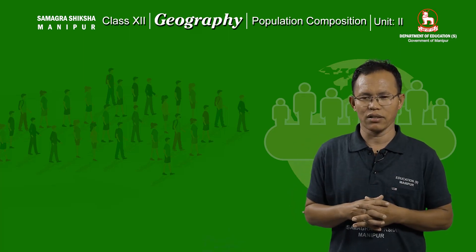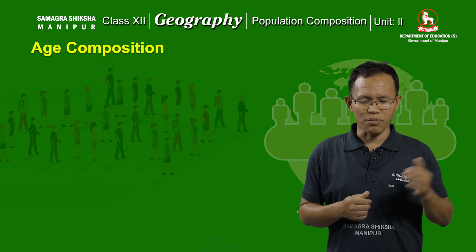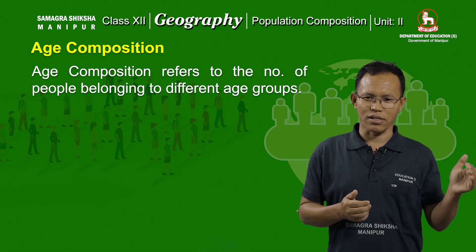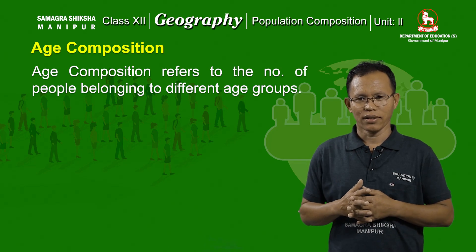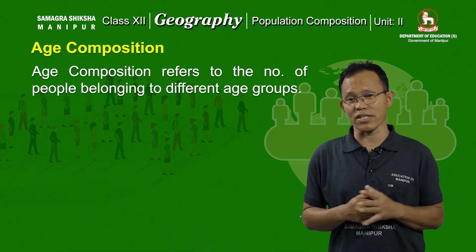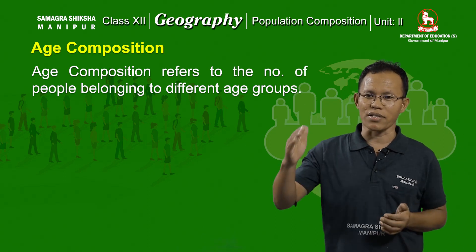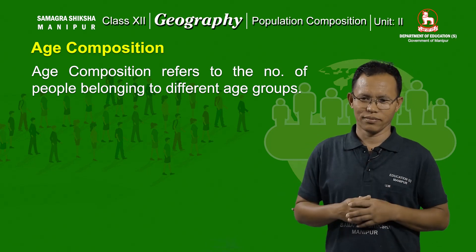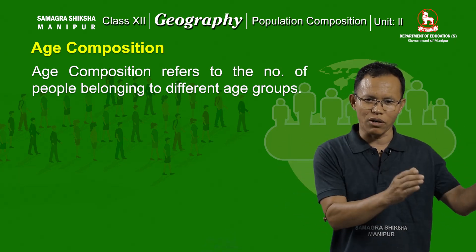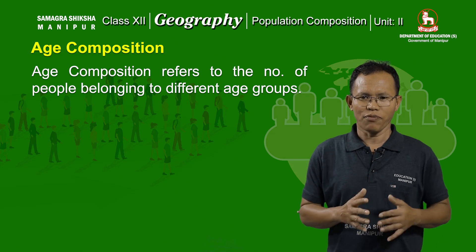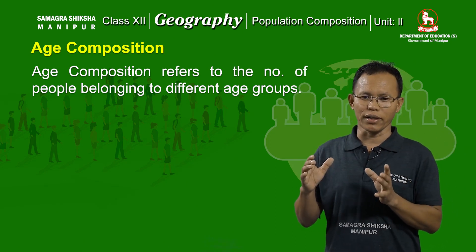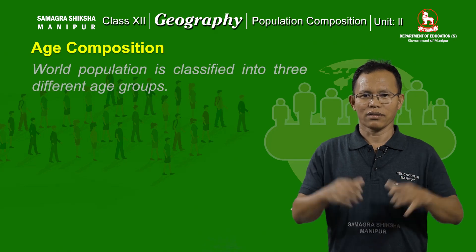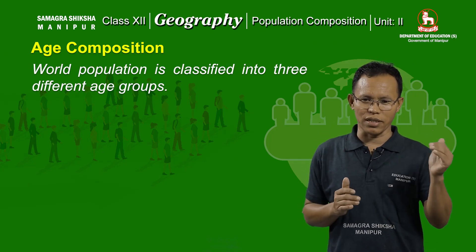Next, we come to another demographic structure — age composition. We know that the population of any country consists of people belonging to different age groups, starting from 0 years up to 100 and above. The census of different countries of the world, including India, has categorized age composition of population into three broad age groups.